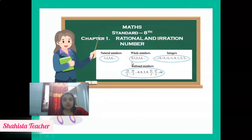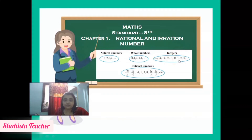Whole numbers are those numbers which start from 0. Integers are those numbers where positive and negative numbers come together along with 0. On a number line, all positive numbers are on the right-hand side, all negative numbers are on the left-hand side, and 0 is in the middle.